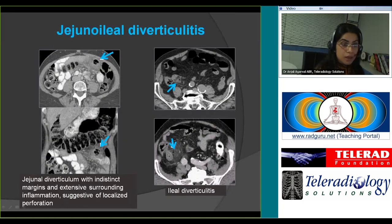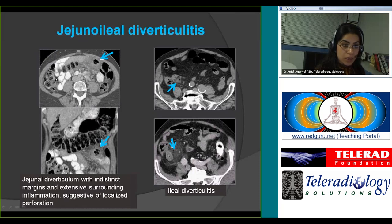Some examples of small bowel diverticulitis: this is an inflamed jejunal diverticulum with indistinct margins, extensive surrounding fat stranding and inflammation suggesting localized perforation, better seen on coronal reformatted images. Another case of ileal diverticulitis with microperforation — a tiny diverticulum; in this case, the appendix was normal.